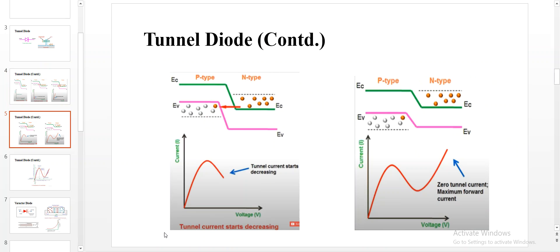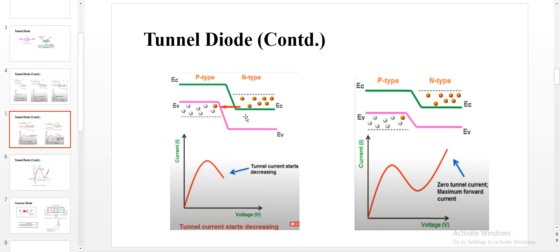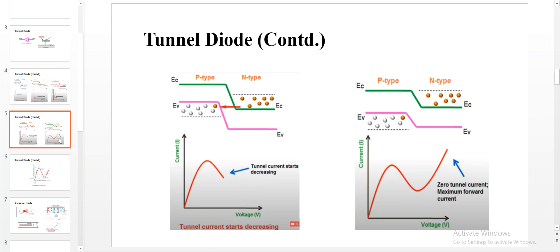In the fourth step, if we keep on increasing the voltage beyond the peak point, the energy level is raised. There will still be movement of electrons but there is misalignment in the overlapping. In the diagram, the conduction band of the N side goes above the valence band of the P side, causing misalignment.